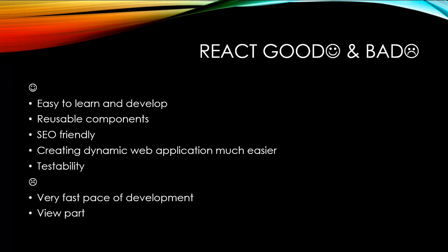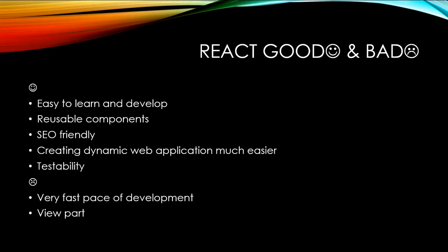A React application is made up of multiple components, each with its own logic. It can be a functional component, a non-functional component, a controlled component, or an uncontrolled component. These components are responsible for outputting small, reusable pieces of HTML code. Reusable code makes your apps easier to develop and maintain, which is also where testability comes in — you should thoroughly test how a component renders and how many times it renders.